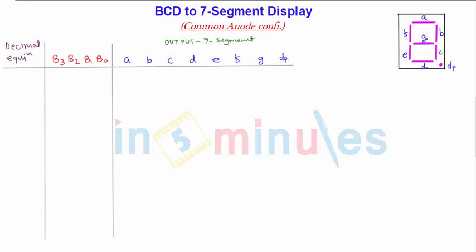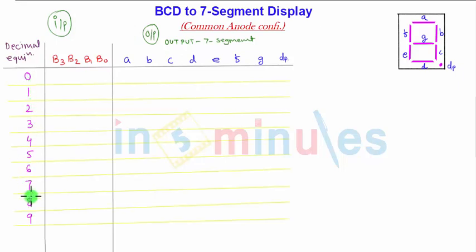Let us start with the BCD to 7-segment display. There is the decimal equivalent in the first column. This is going to be the input section and this is going to be the output section, that is the output to the 7 segments. In Binary Coded Decimal, we know that 0 to 9 numbers are there. The first column 0 to 9 is the decimal input. B3, B2, B1, B0 are the BCD input bits.